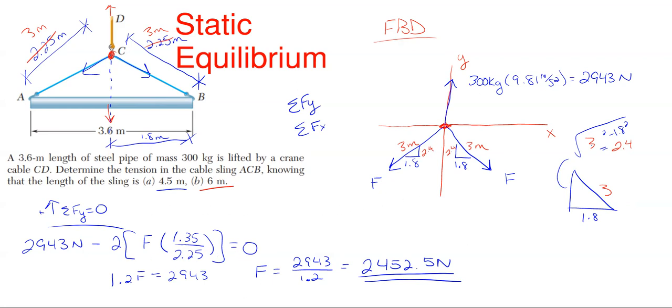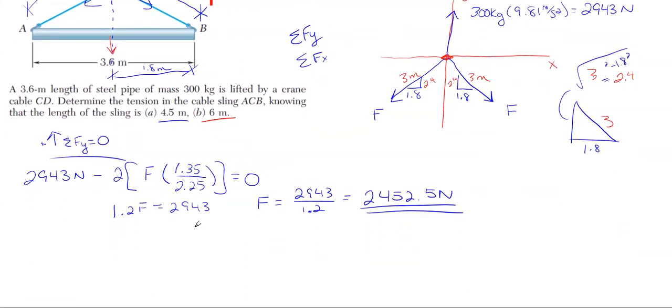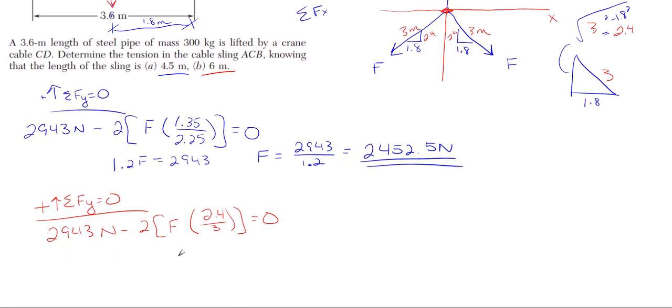Just adjusting our portions down here, it's going to be very similar to what we just did and the same reasonings behind it. Summing forces in the Y direction equal to zero, the equation really does not adjust too much. We still have our 2943 newtons minus two forces of F times a ratio, and now it's going to be 2.4 over 3 because the 2.4 is in the Y direction. So what I have here is 1.6F equals 2943 newtons. My F for this particular portion of the problem is 2943 divided by 1.6, and this gives me a total force in that cable of 1839.4 newtons of tension.